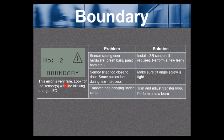Boundary error. This error is very rare. In fact, personally, I've never seen it in the field. Look for the sensor or sensors with the blinking orange LED. The most common problem on a boundary error, the sensor is seeing the door hardware, crash bars, panic bars, etc. The solution could be to install LZR spacers if required and then perform a new learn. We'll show you the spacers, I believe, on the next slide.